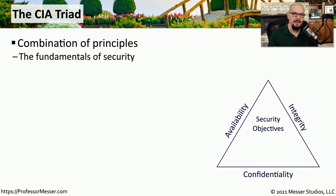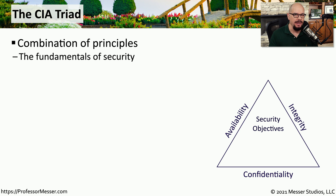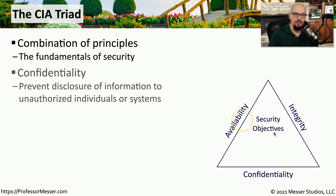When we refer to the fundamentals of IT security, one common description is the CIA triad. Sometimes you'll see this referred to as the AIC triad, so that there's no confusion between this set of fundamentals and the US federal government's Central Intelligence Agency. The three different arms of the CIA triad refer to confidentiality, integrity, and availability.